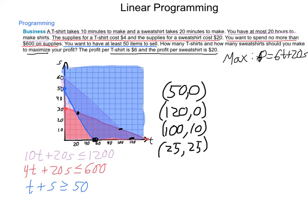We're going to have to check them against our objective function, p equals 6t plus 20s. As we go through and do the calculations for this, the point 50, 0 gives us a profit of $300. The point 120, 0, so if we sell 120 t-shirts and no sweatshirts, that will give us a total profit of $720. Third, 100 t-shirts, 10 sweatshirts, will give us $800 profit. And if we have the same of each, 25 t-shirts and 25 sweatshirts, this, when run through our objective function, gives us a profit of $650.